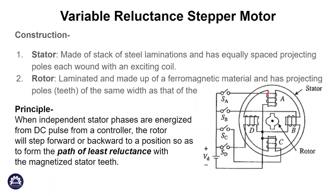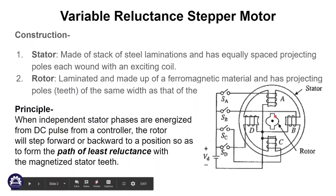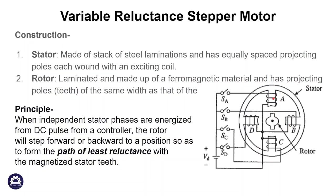The stator has 4 poles. The rotor is the inner part. One stator pole is energized by a pulse, which creates a magnetic field. The rotor moves to a position of minimum reluctance — the path of least reluctance — aligning itself with the energized stator pole.